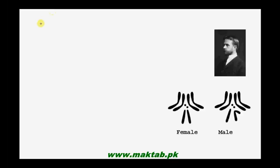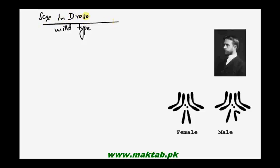Bismillah rahman rahim. Secondary Biology, Chapter 22 — Variation in Genetics. In this session we are studying Thomas Hunt Morgan's experiments. In the previous lecture we covered Morgan's experiment. Today our main topic is sex linkage in Drosophila — the fruit fly, whose full name is Drosophila melanogaster.